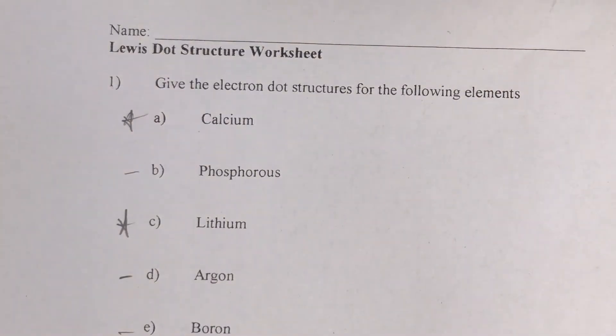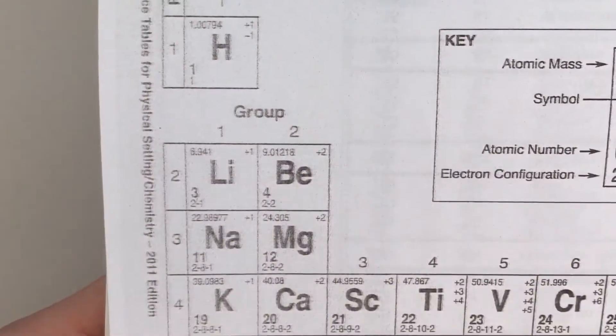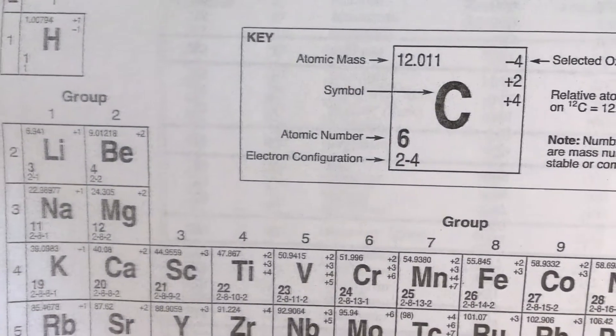In this video we're going to look at how to draw Lewis dot structures, sometimes also known as electron dot diagrams. These rely on only the valence electrons, which are the outside electrons in any element or any energy level.